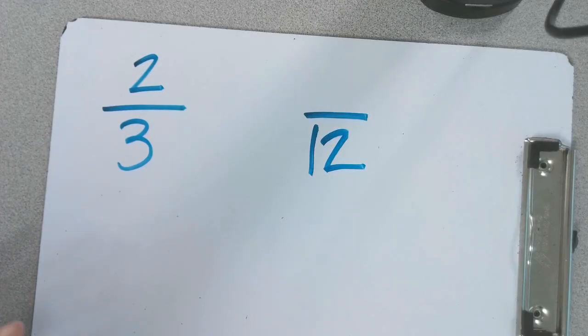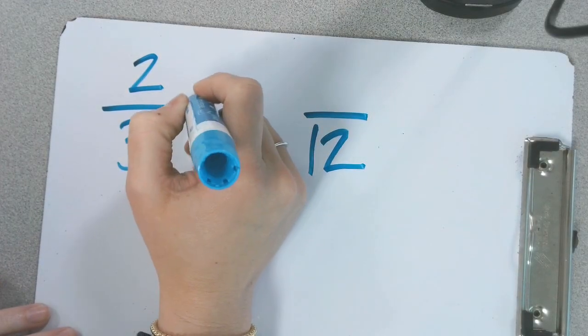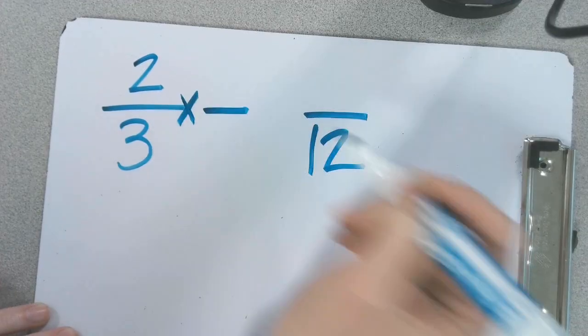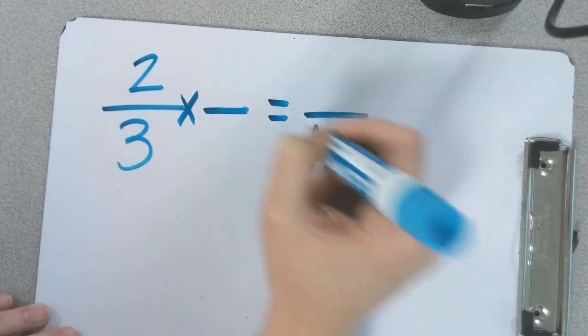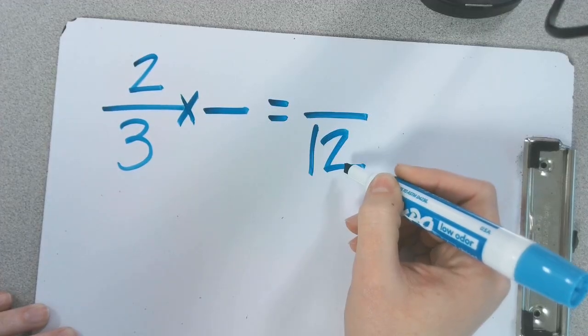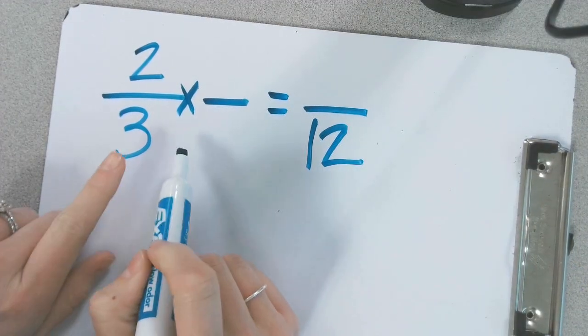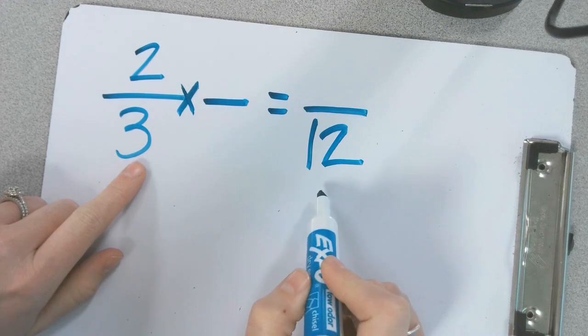And this is how we're going to set it up to find an equivalent fraction. We've got to multiply this by a fraction equivalent to 1 to get a denominator of 12. Now what number can I multiply 3 by to get 12?